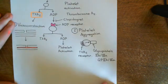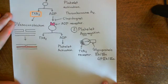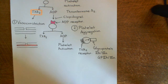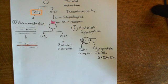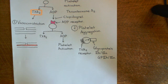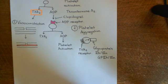When thromboxane A2 binds to the thromboxane A2 receptor on the platelets, it leads to a downstream signaling pathway which activates the GP2B/3A protein. Once this GP2B/3A protein has been activated, it can bind to a lobe of another protein within the blood known as fibrinogen. Fibrinogen is this protein which has two lobes with a connection between the two lobes.